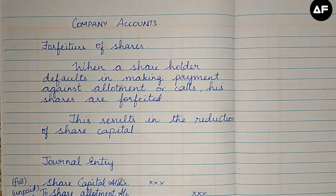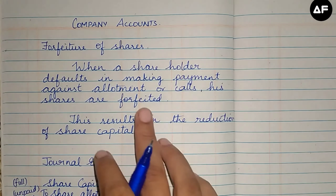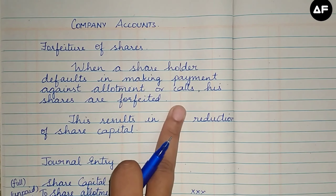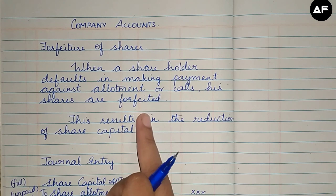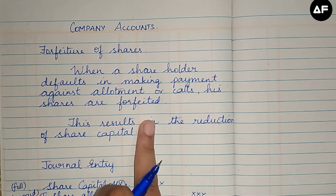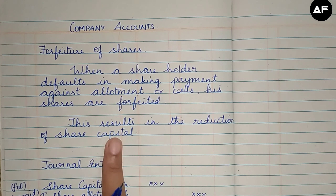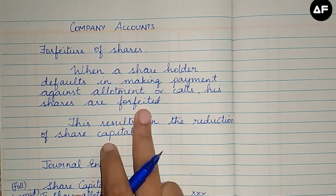Today we are going to see about company accounts — specifically the forfeiture of shares. Forfeiture of shares occurs when a shareholder defaults in making his payment against the allotment or calls. His shares are cancelled, and when you cancel shares for the organization it results in the reduction of the share capital.